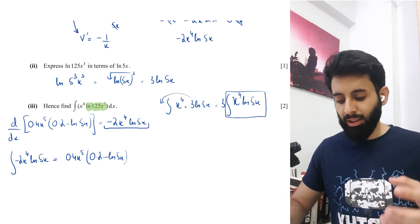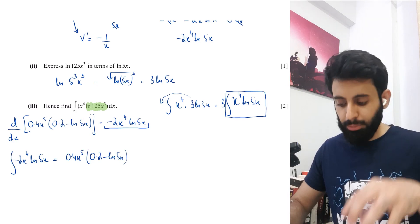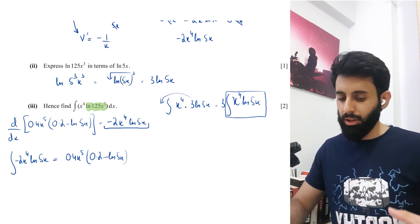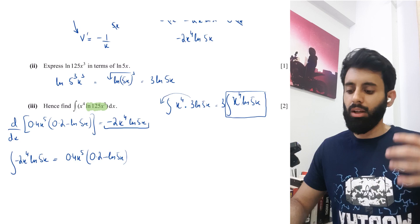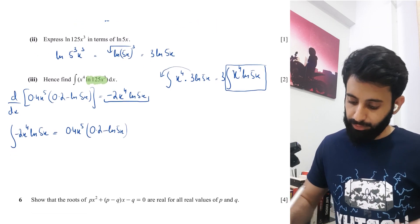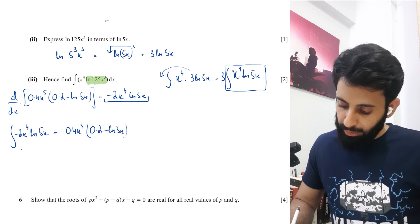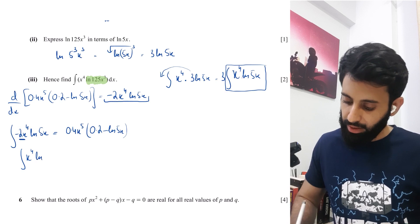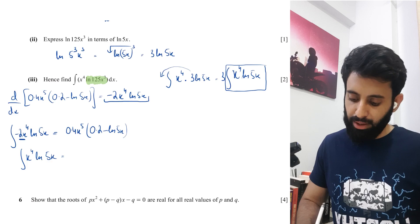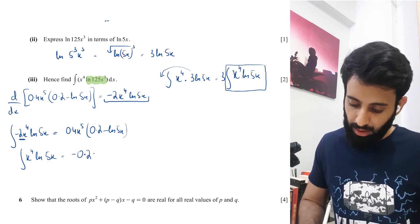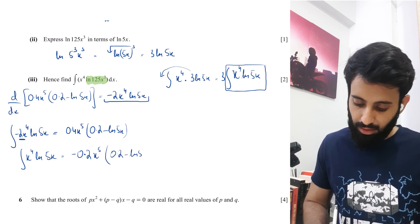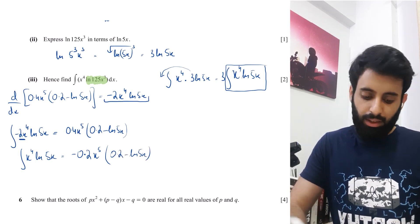To isolate the integral of x^4·ln5x, we take the minus 2 over to the left-hand side — it gets divided. So the integral of x^4·ln5x equals 0.4 / (minus 2) times x^5(0.2 minus ln5x), which gives minus 0.2x^5(0.2 minus ln5x).